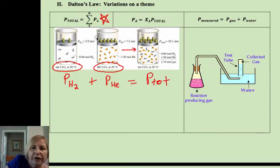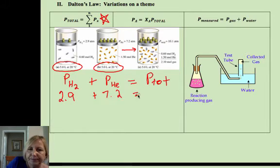So if this was 2.9 as is in your picture, plus 7.2, we get a total pressure of 10.1 atmospheres, a simple sum.